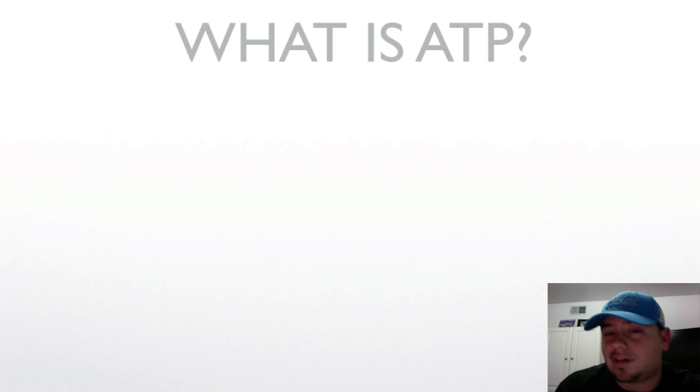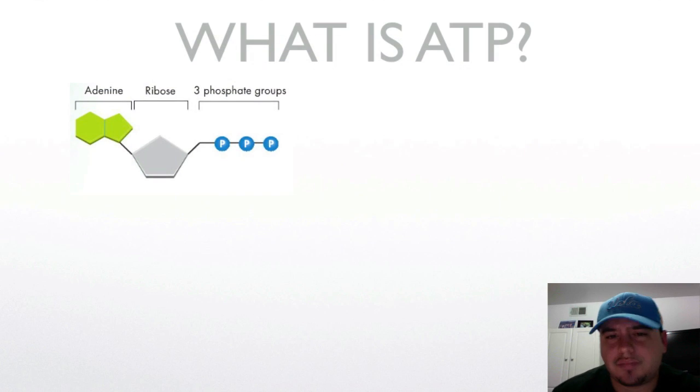We first need to know what ATP is. So what is ATP? ATP is called adenosine triphosphate. Adenosine triphosphate. Again, it has these three parts.